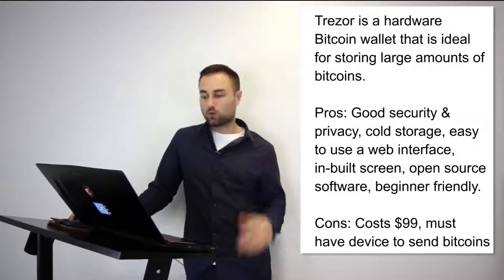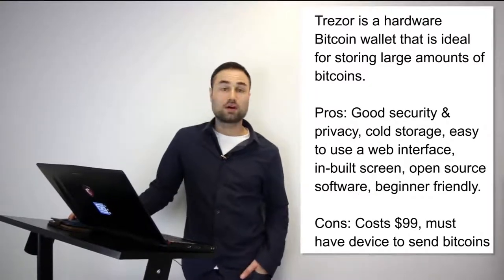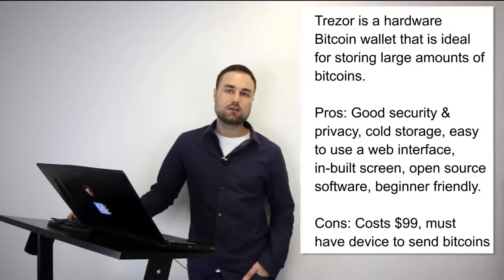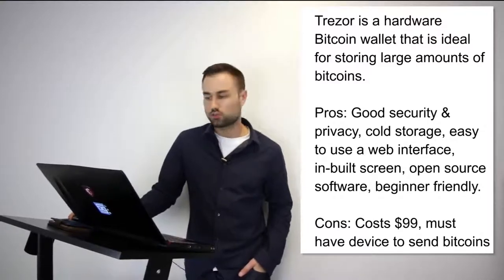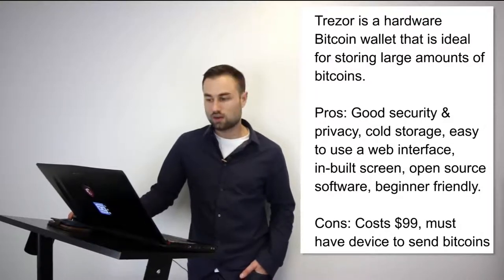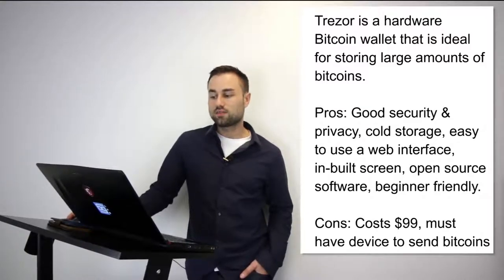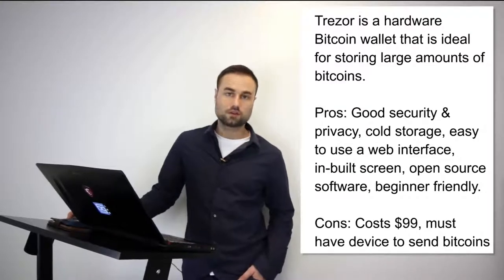I want to talk about two hard wallets. The first is Trezor — a hardware Bitcoin wallet ideal for storing large amounts of Bitcoin. Trezor cannot be affected by malware and never exposes your private keys, which makes it really safe. Pros: great security and privacy, cold storage, easy-to-use web interface, built-in screen, open source software, and beginner-friendly. Cost is around $100, but you must have the device to send Bitcoins. I think it's an awesome device and recommend it to most people.